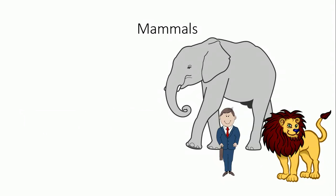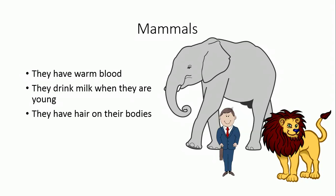Mammals. Mammals have warm blood. They drink milk when they are young. They have hair on their bodies. Examples include elephant, monkey, lion, and cow. Humans are mammals too.